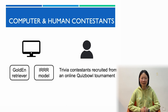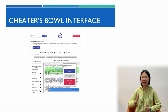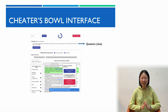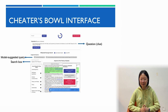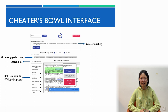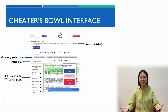Here is our interface for playing cheater's ball. The interface showed contestants a single clue from either Quiz Bowl or HotpotQA. To start searching, contestants either type their own queries in the search box or click on a model-suggested query from IRRR or Golden Retriever. The search engine returns results retrieved from a corpus of Wikipedia pages by two different search engines: BM25, implemented using classic search, and dense passage retrieval.